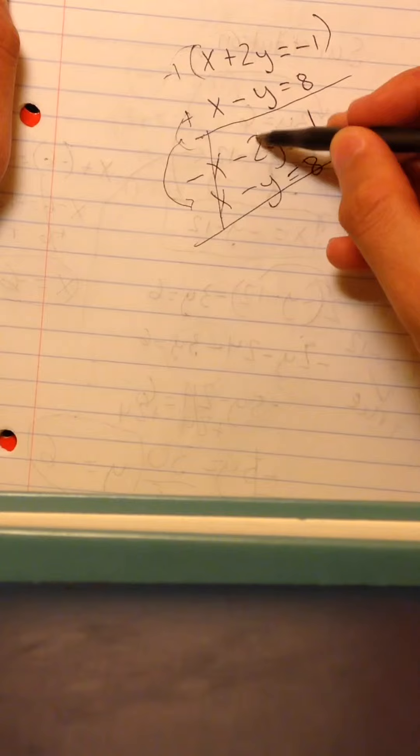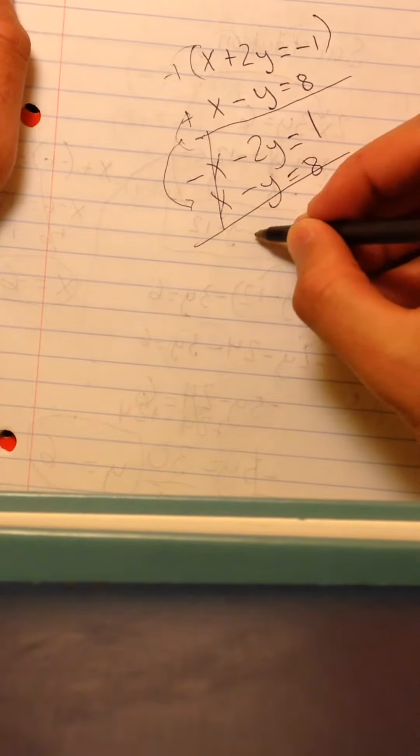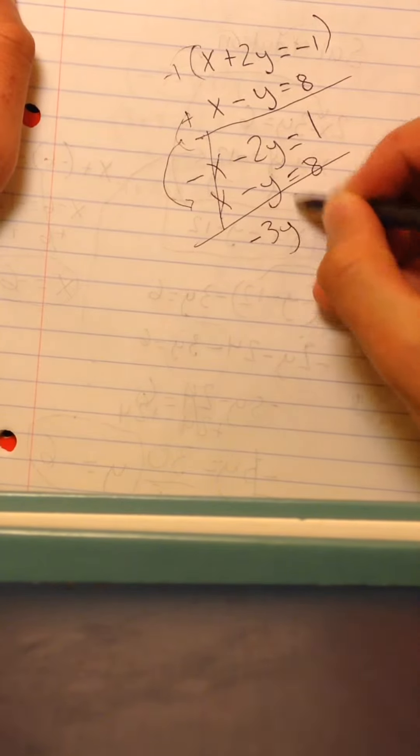These cancel out, and if you add these two together, they would be negative 3y, and if you add these two together, they would be 9.